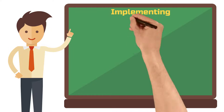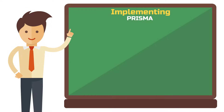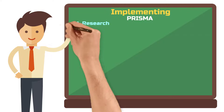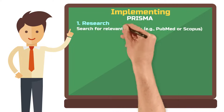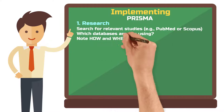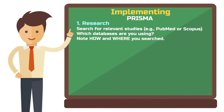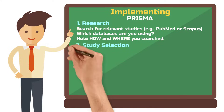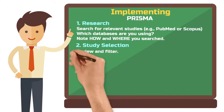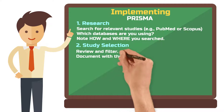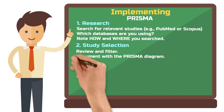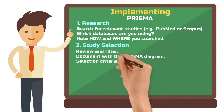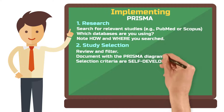Here are a few simple steps to implement the PRISMA literature search in your own work. First, start with research: search multiple databases such as PubMed or Scopus for relevant studies, depending on what discipline you're in. Make a note of how and where you searched. Then, study selection: review the studies and remove those that don't fit your criteria. Use the PRISMA diagram to document this process, but be aware that you need to develop your own selection criteria.